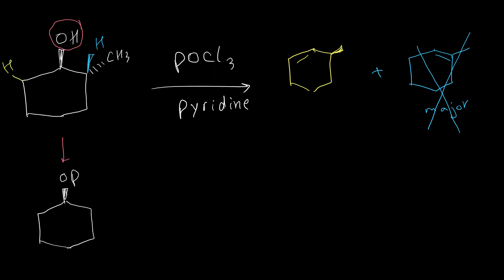The reason is that the leaving group and hydrogen must be anti-periplanar in E2 reaction. So when this OH converts to the leaving group, we have OPOCl₂ in the front. The hydrogen in the front cannot undergo E2 elimination. But on the left side we have two hydrogens: one hydrogen is in the back and another is in the front. Only the yellow hydrogen can go through the E2 reaction because it is anti-periplanar to the leaving group. So the only product that forms is this one. It is very important to pay attention to the orientation of hydrogen when we have an E2 reaction.